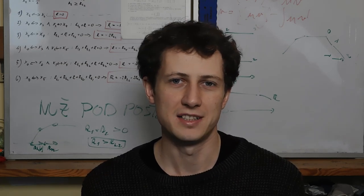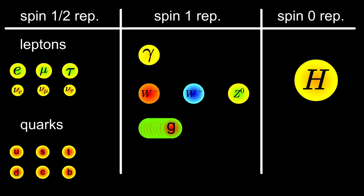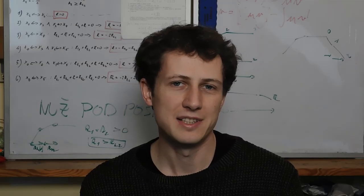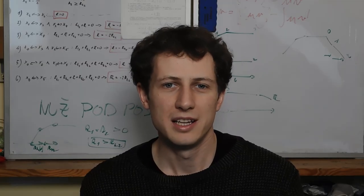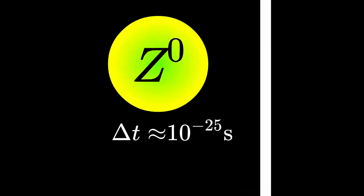The standard model of particle physics is by many considered to be the most successful theory we have. This is the table of all the particles the standard model is made of. And physicists claim to have discovered all of them, even though some of them live as short as 10 to the minus 25 seconds.